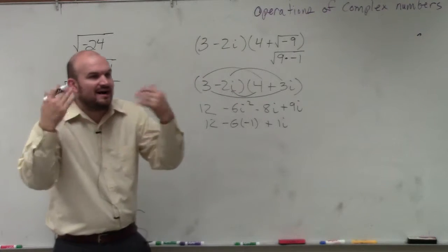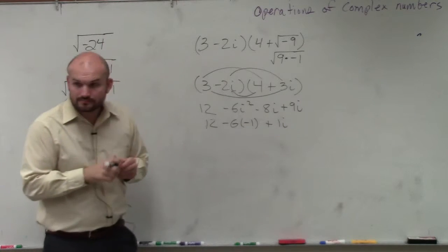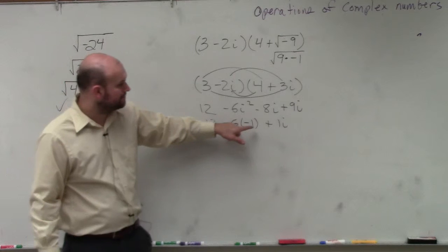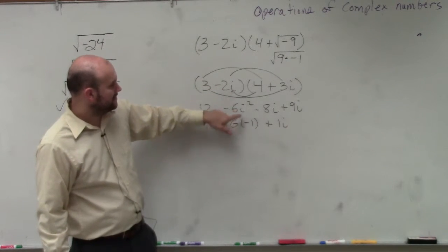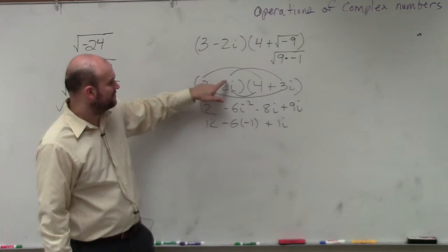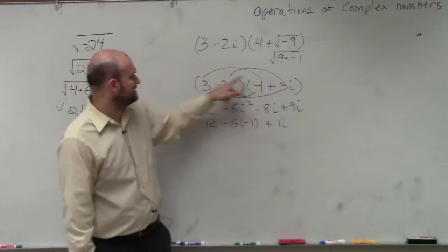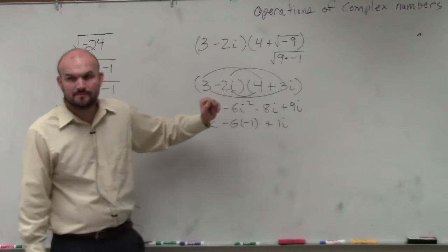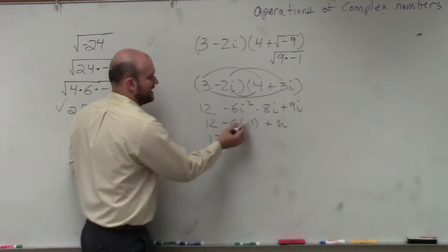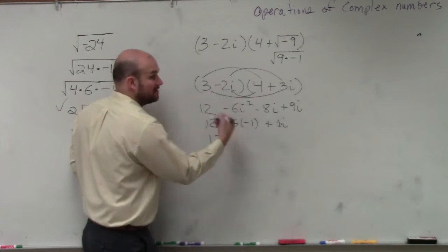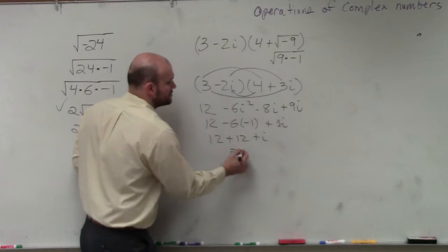Just like I was thinking — if you think of i a lot of times as like your variable. How did you get negative 6 and negative 1? Because i squared is negative 1. Negative 6 came from negative 3 times negative 2 is negative 6, and i times i is i squared. So 12 minus 6 times negative 1 is positive 12 plus i — so the answer is 18 plus i.